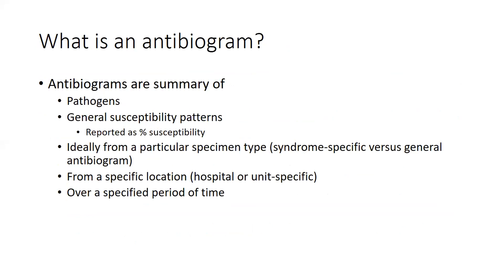What is an antibiogram? An antibiogram is a summary of common pathogens and their general susceptibility patterns, reported as a percentage susceptibility. Ideally, the data should be from a particular specimen type — we talk about syndrome-specific antibiograms. An example would be a respiratory infection antibiogram, where all data would have been derived from respiratory samples: sputa, tracheal aspirates, and bronchial samples.